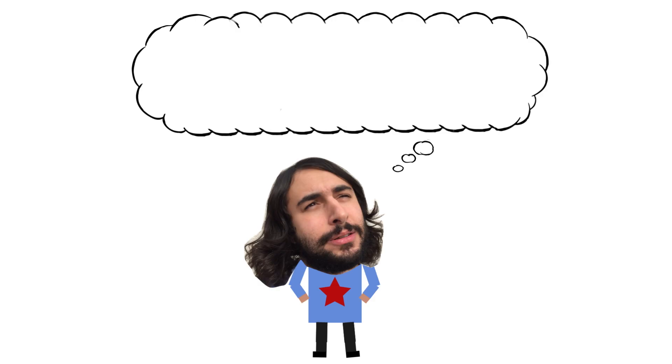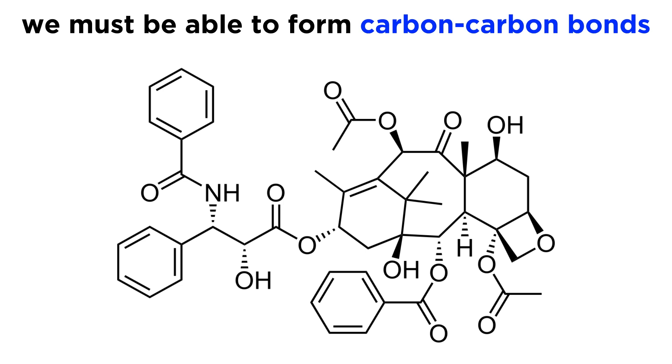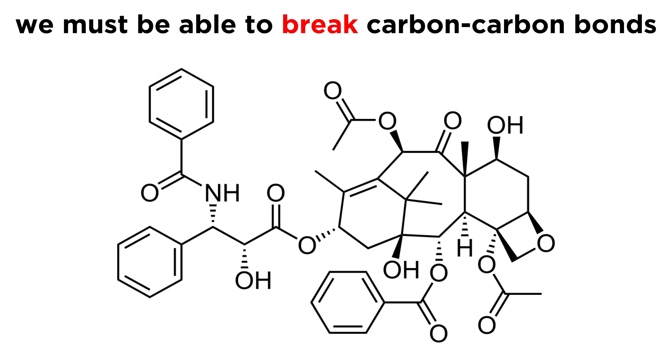Professor Dave Explains. In developing a toolkit for organic synthesis, we will be very interested in gathering ways to form carbon-carbon bonds. This is because organic molecules consist of a carbon skeleton which needs to be assembled one way or another, but it is also important to have techniques at one's disposal that allow for the cleavage, or breaking, of carbon-carbon bonds.